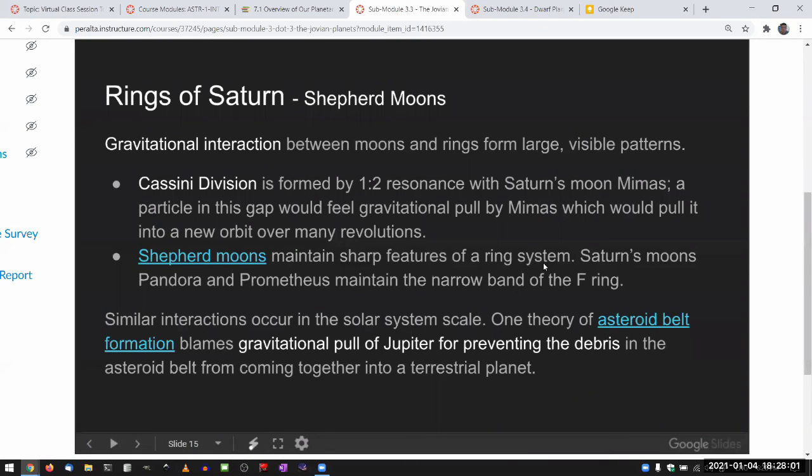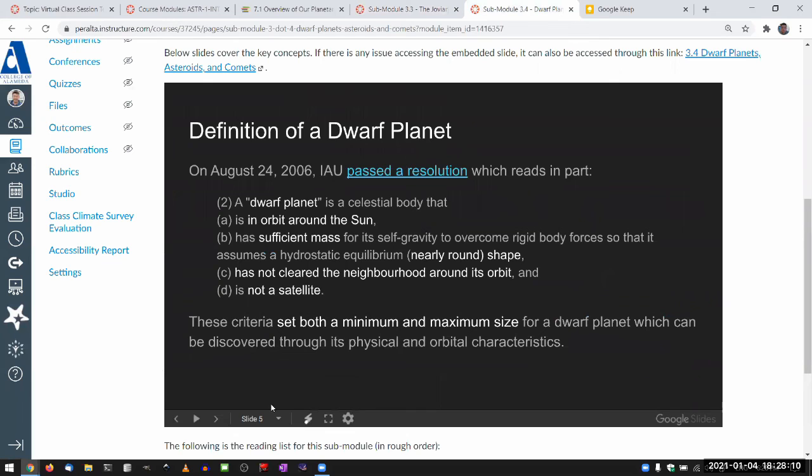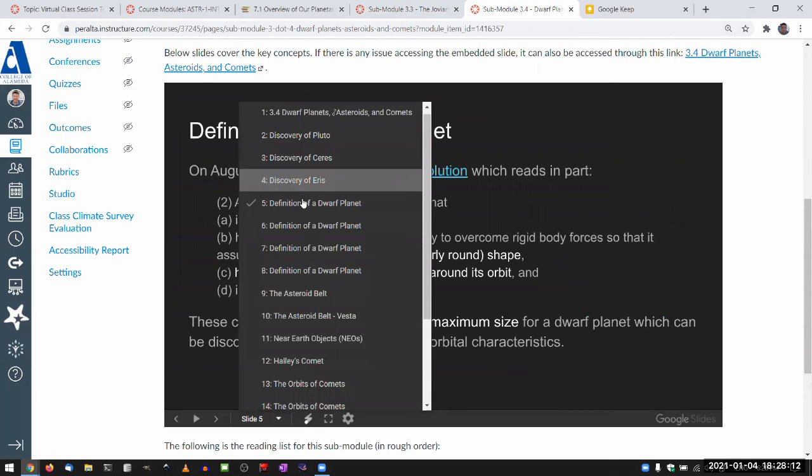Saturn has some of the rings that are maintained by its shepherd moons, and in submodule 3.4, you see the features that I was highlighting before.